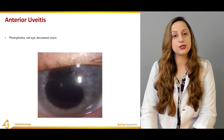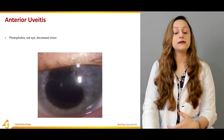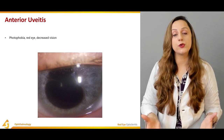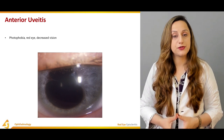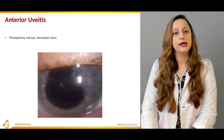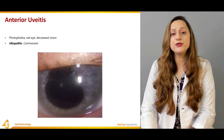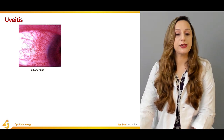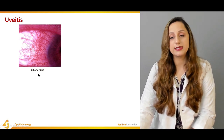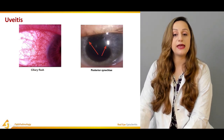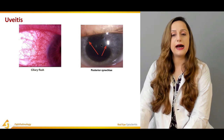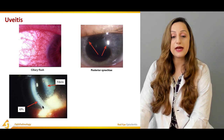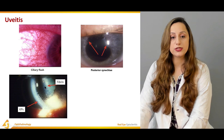Anterior uveitis is usually associated with photophobia — the patient is intolerant to light. Red eye is a very common presenting complaint, along with decreased vision or blurring. The cause is usually idiopathic. On examination, a ciliary flush is noted — dilatation of the minute veins around the cornea. Posterior synechiae involving the iris can be observed, and KP spots are quite evident on slit lamp examination, along with fibrin deposits.